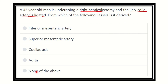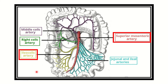First of all, let's see the ileocolic artery. Here, this branch — this artery — is the ileocolic artery. We can see some other structures closely related to it, such as the middle colic artery, right colic artery, and the ileocolic artery.